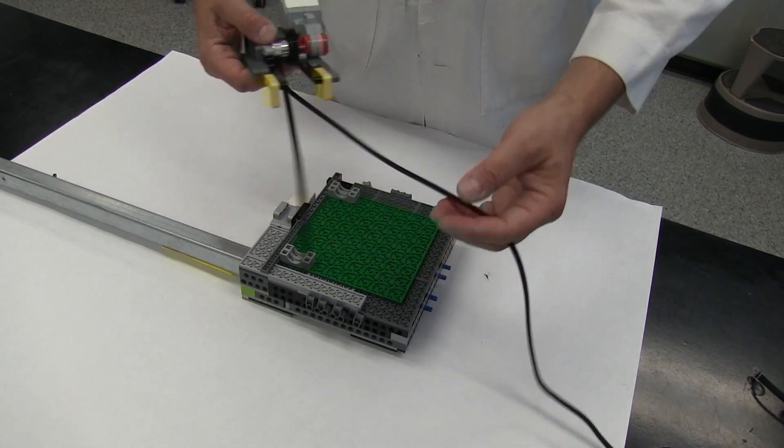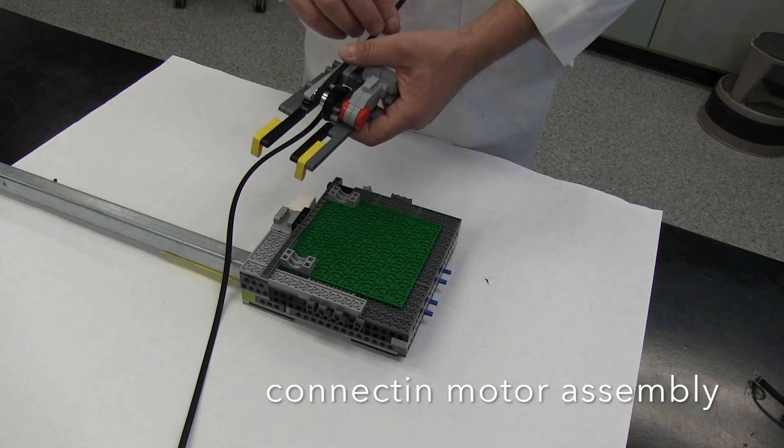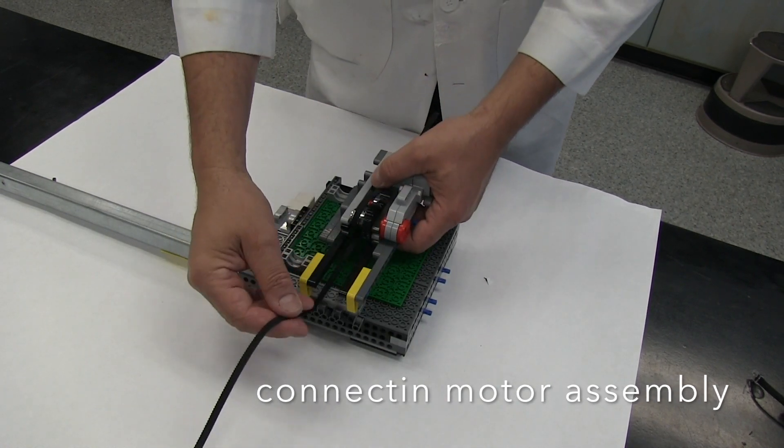Now we will install the motor assembly unit with belt into the robotic arm by connecting the motor assembly unit to the casing.